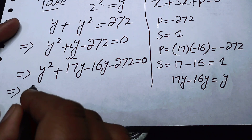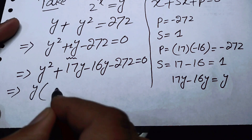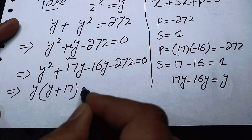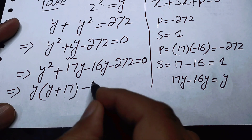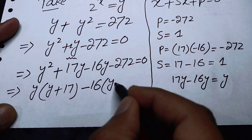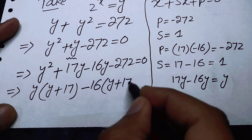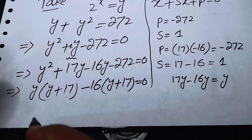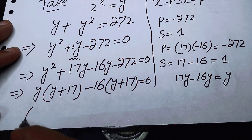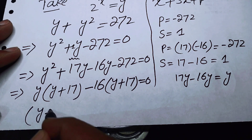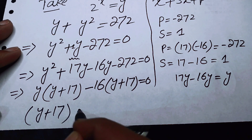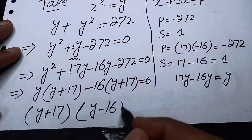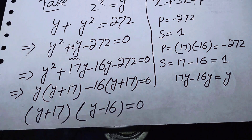We factor by grouping — taking y common from the first two terms and 16 common from the last two terms — giving us (y plus 17) times (y minus 16) equals 0.